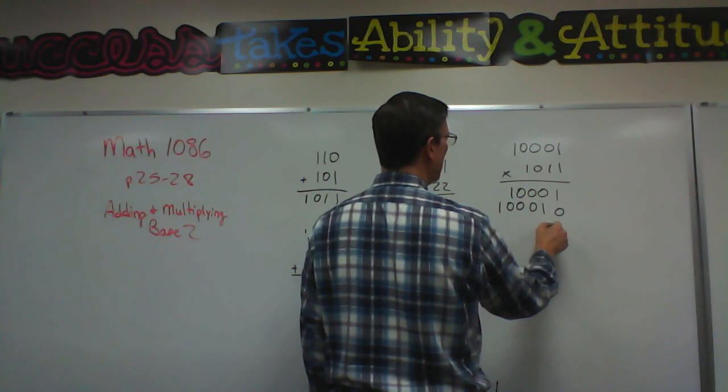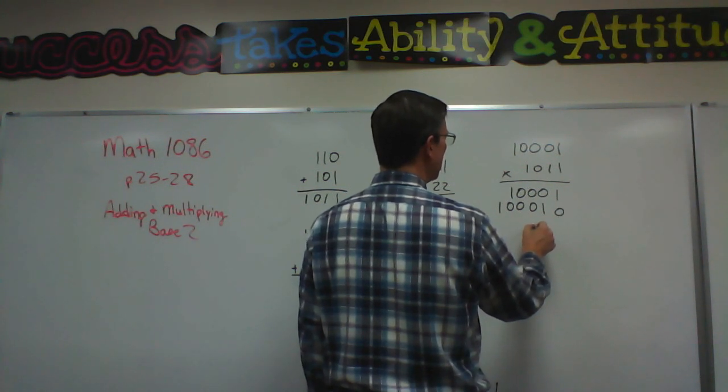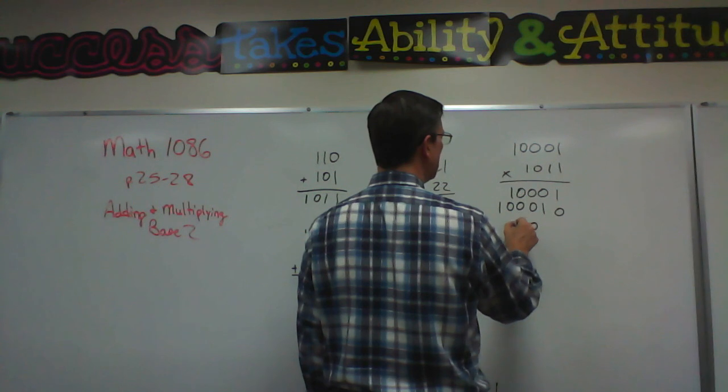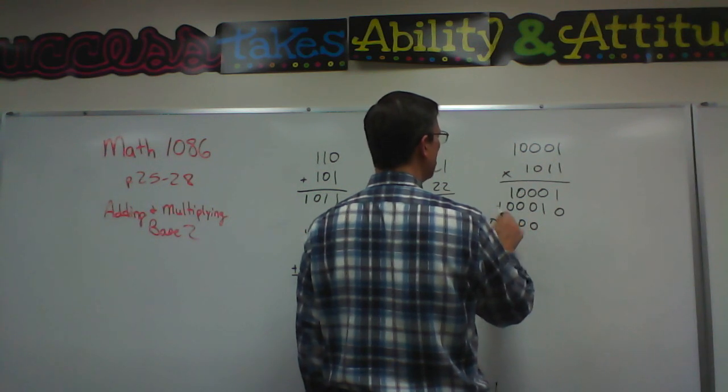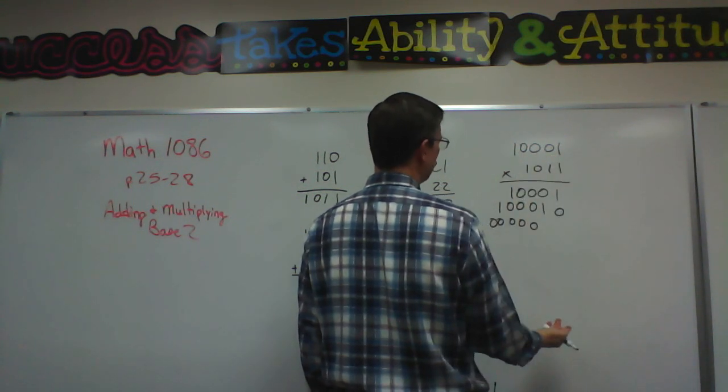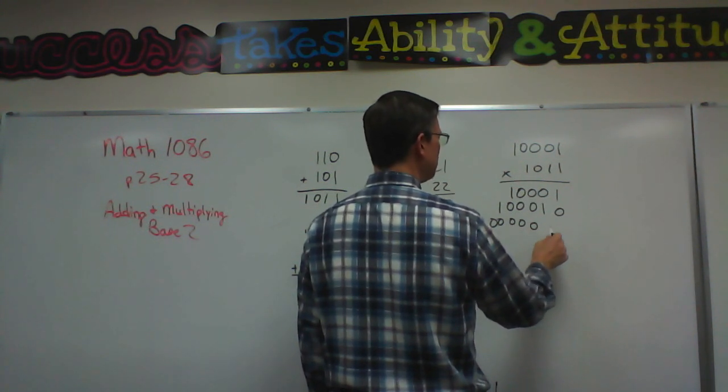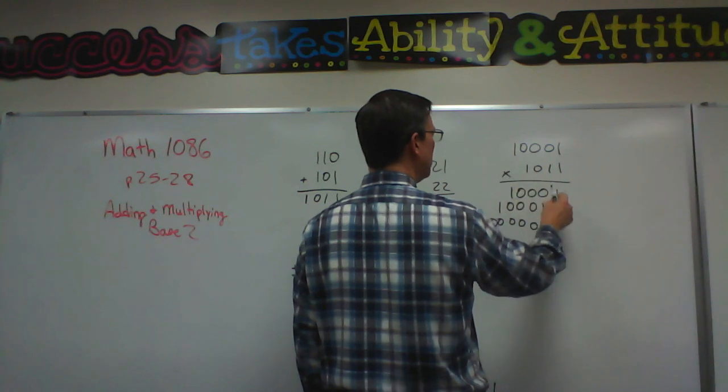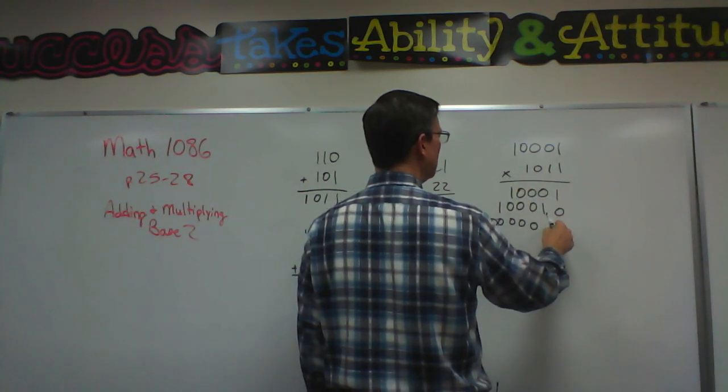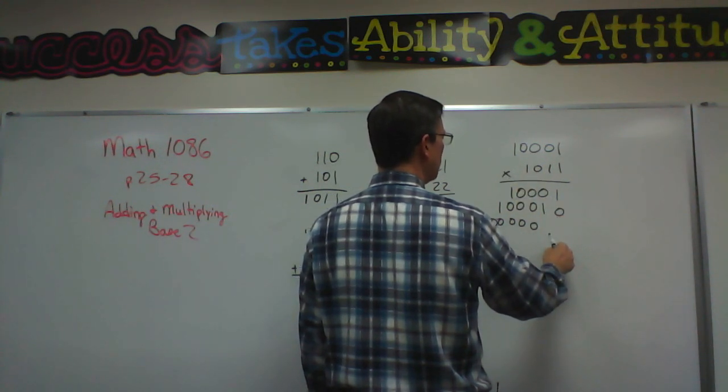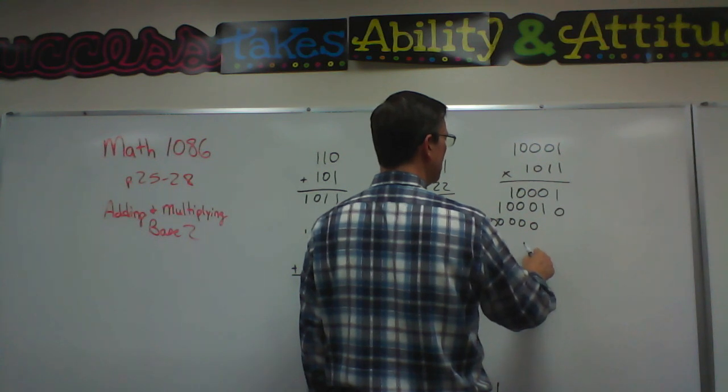Third one, we move over one, two, and then we're going to do 0, 0, 0, 0, 0 because 0 times all of these is just five big fat zeros. Then for the next place value, it's the fourth one, so I need to move over three places: one, two, three.